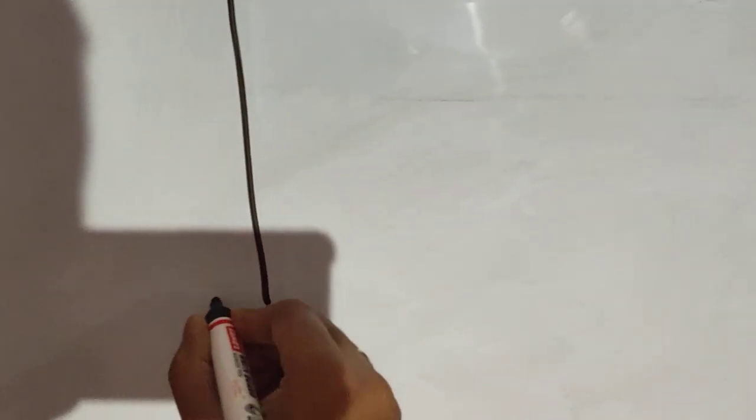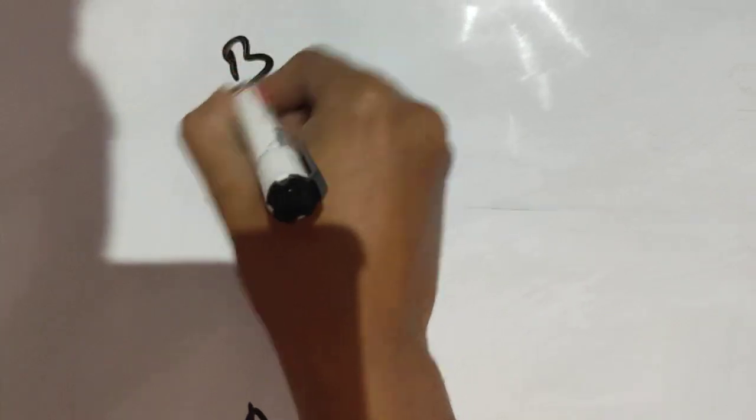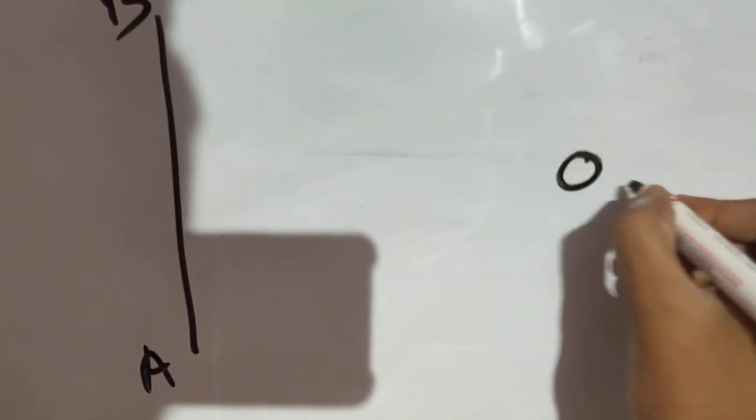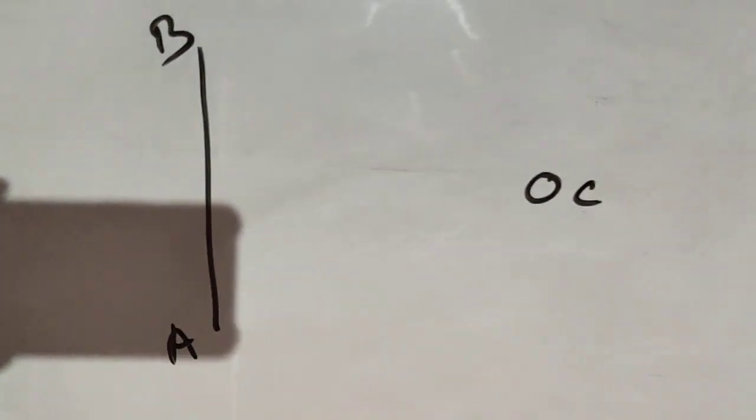Suppose we have a chain line on the ground, let's name it AB, and there is an object. Suppose any kind of object C on this side of the survey line.